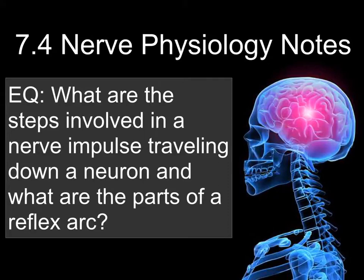This is 7.4 nerve physiology notes. The essential question is: what are the steps involved in a nerve impulse traveling down a neuron, and what are the parts of a reflex arc?